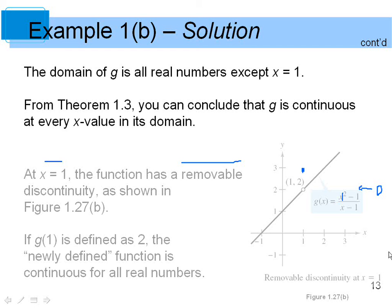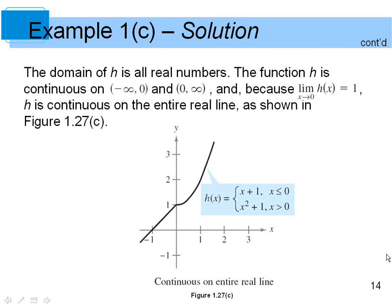Example three: a piecewise function where f(x) = x + 1 for x ≤ 0, and f(x) = x² + 1 for x > 0. The domain is all real numbers. At x = 0, f(0) = 1, and the limit as x approaches 0 also equals 1, so the function is continuous from negative infinity to zero and from zero to infinity. There are no open gaps, so this function is continuous on the entire real number line.